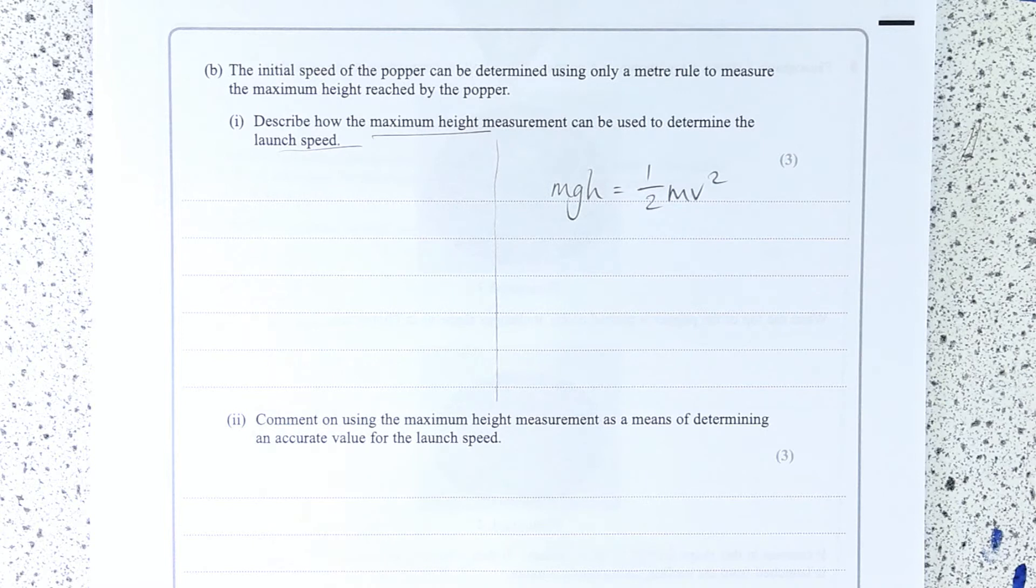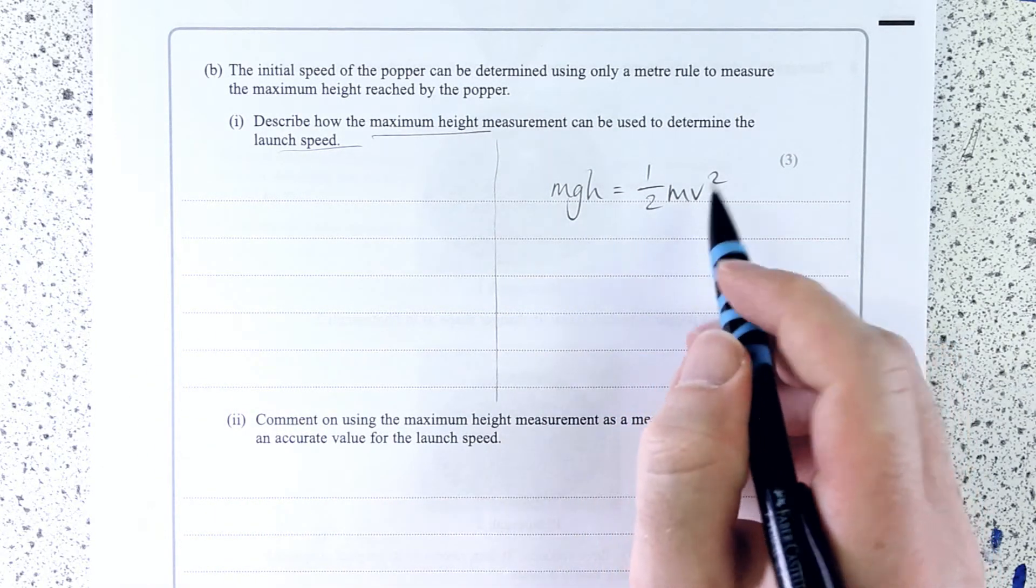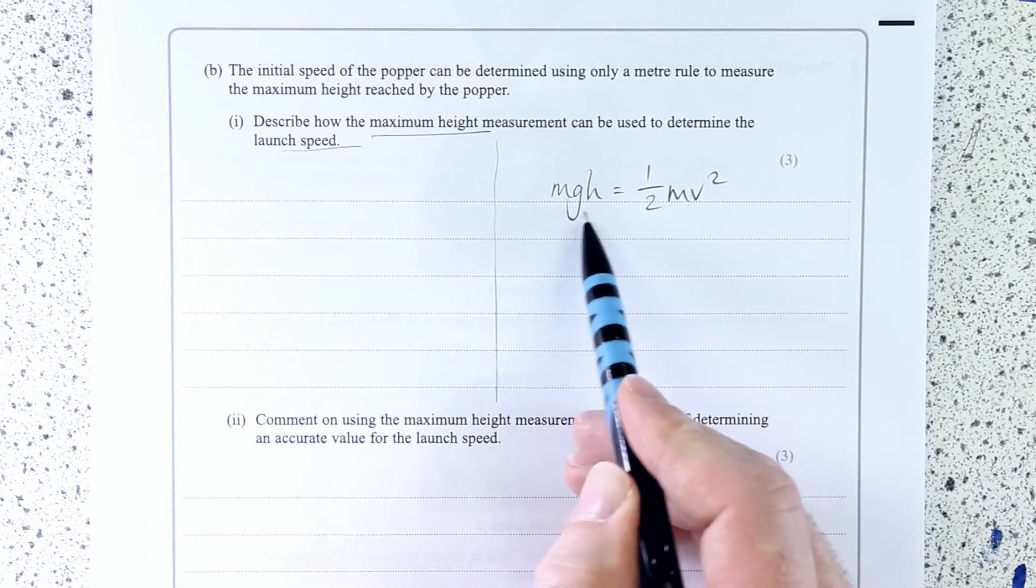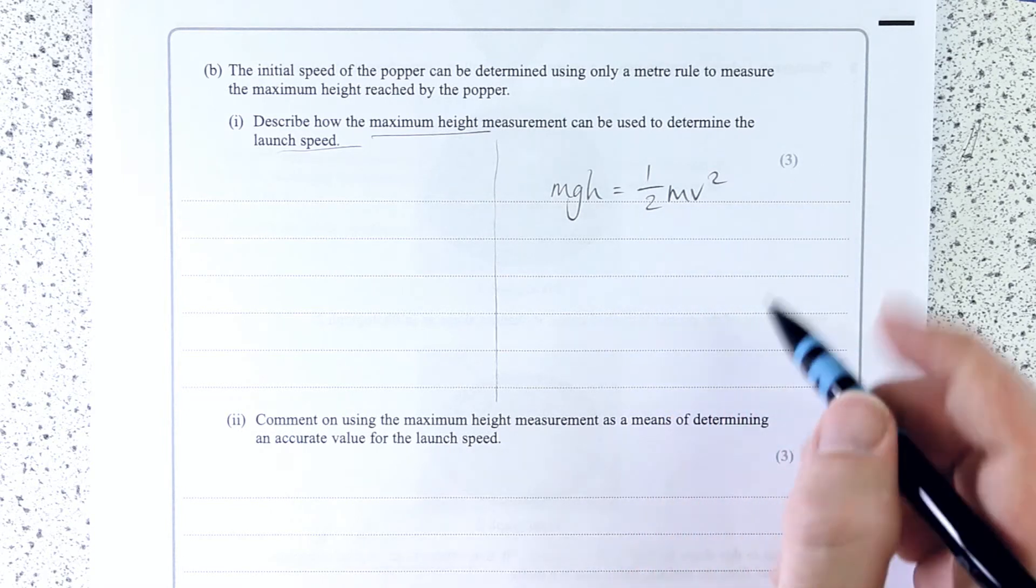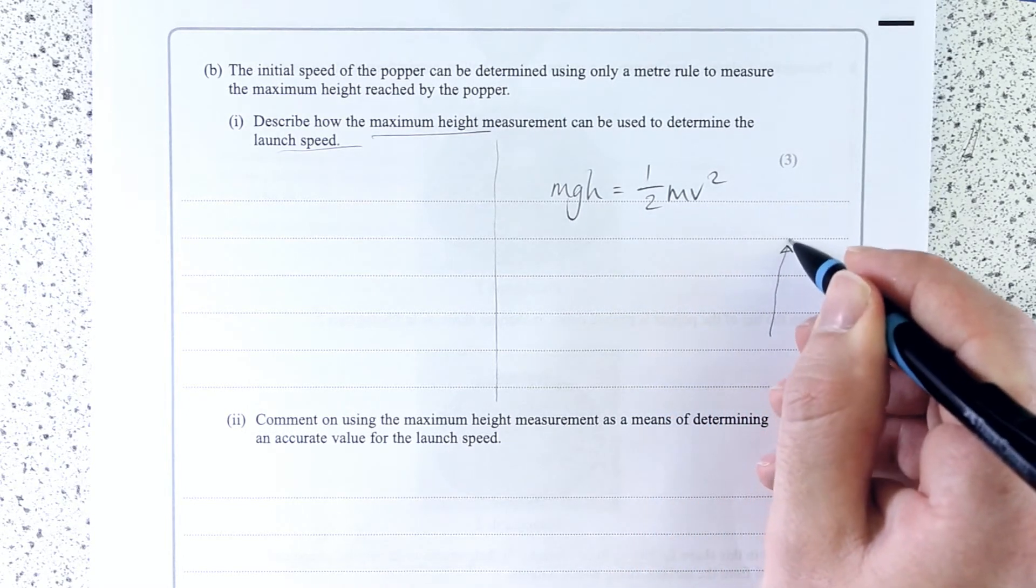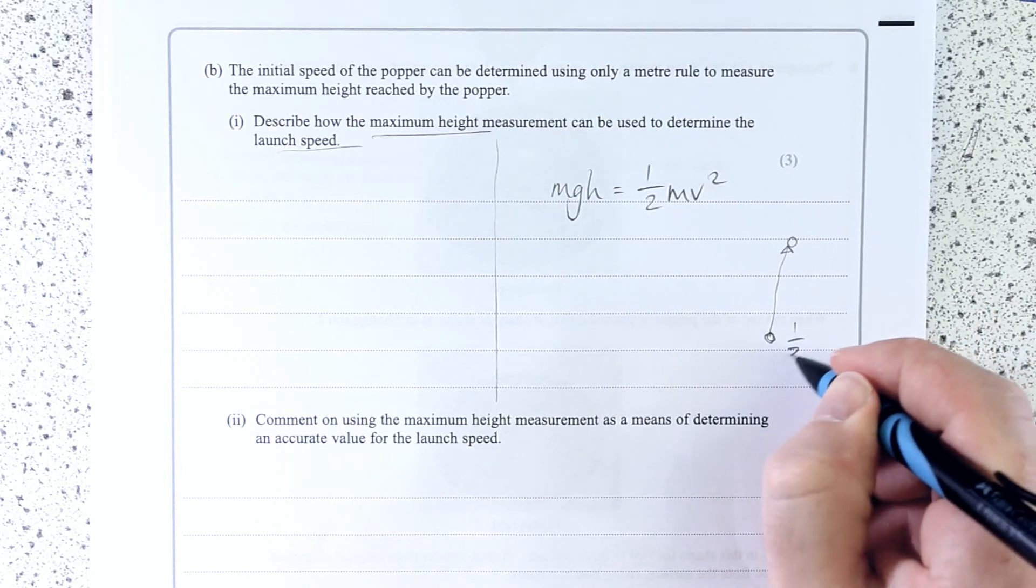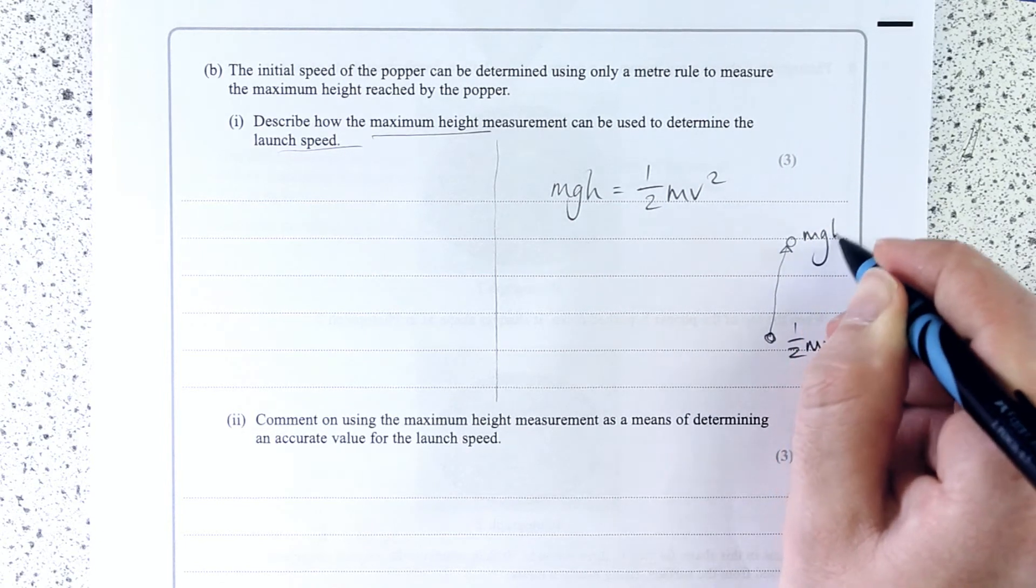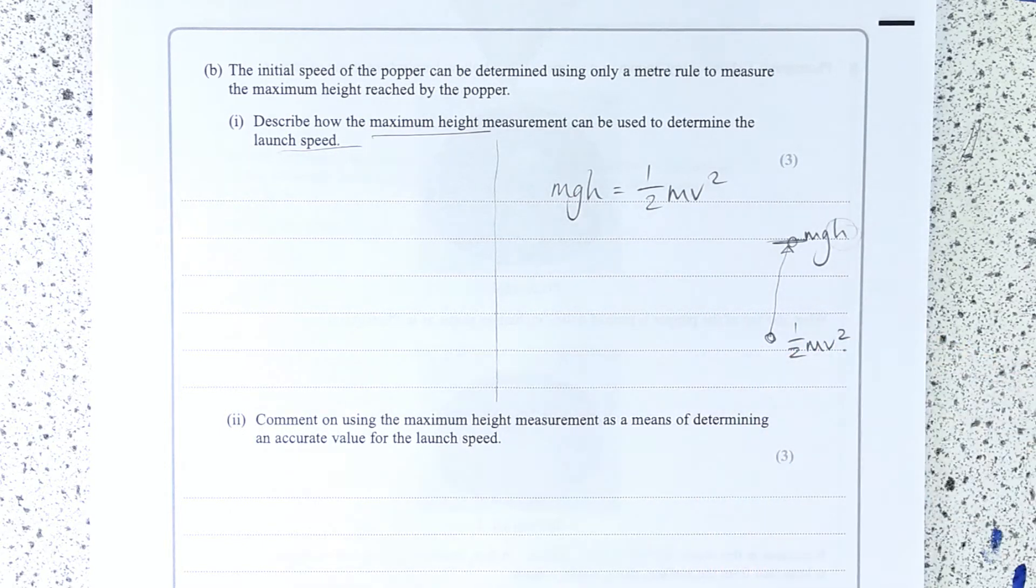So you can use this equation and actually rearrange for V, where V is the initial velocity in this case. We normally talk about balls with gravitational potential turning into kinetic, but this is the opposite way around. Initially it has some kinetic energy, and then that's all turned into GPE. So this is max kinetic energy, this is max gravitational potential. So we're just working out that by measuring the height.